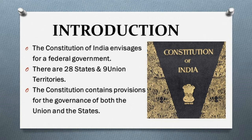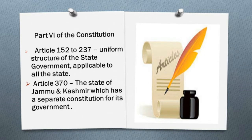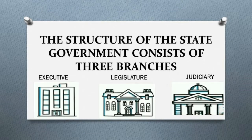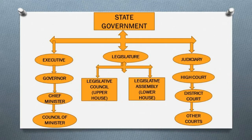There are 28 states and nine union territories. The constitution contains provision for the governance of both the union and the states. It lays down a uniform structure for the state government in Part 6 of the constitution, from Article 152 to 237, applicable to all states except Jammu and Kashmir, which has a separate constitution under Article 370.